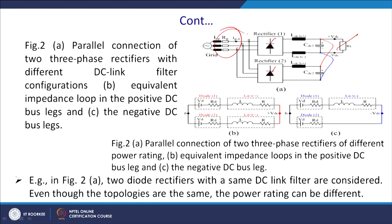The parallel connection of two three-phase rectifiers with different DC link filter configurations has been shown. The equivalent impedance loop in the positive and negative DC bus legs can be modeled as: diode plus Rd, then the inductor L and resistor R, reaching the output node. A small voltage difference between these nodes causes circulating current. The same applies to the negative terminal.